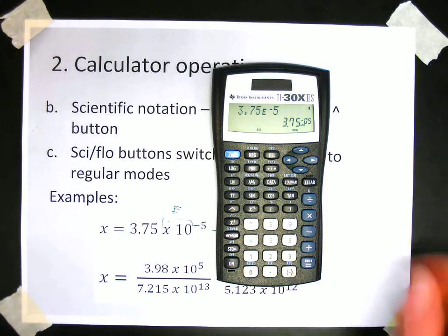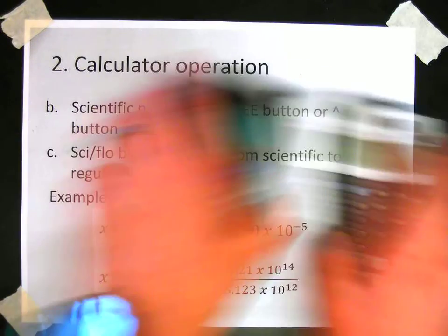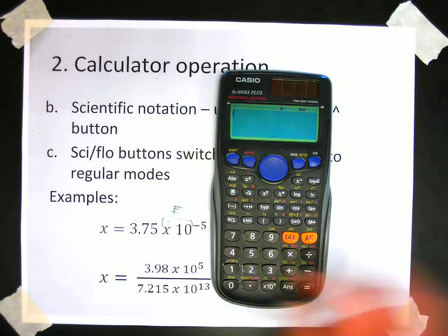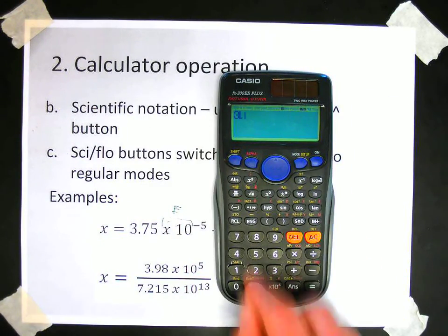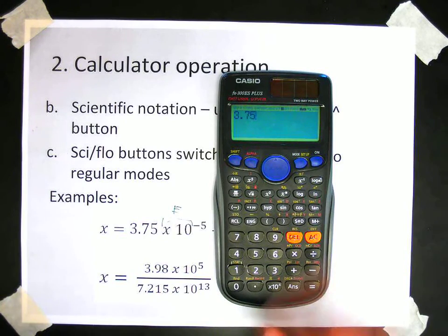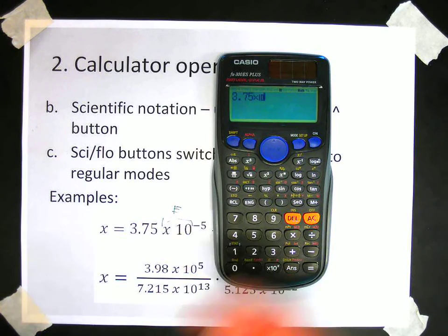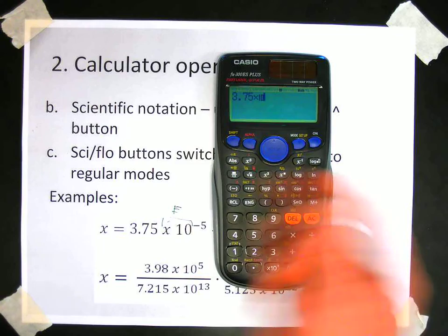And on the Casio, it's going to be 3.75 times 10 to the x, then negative, then 5.